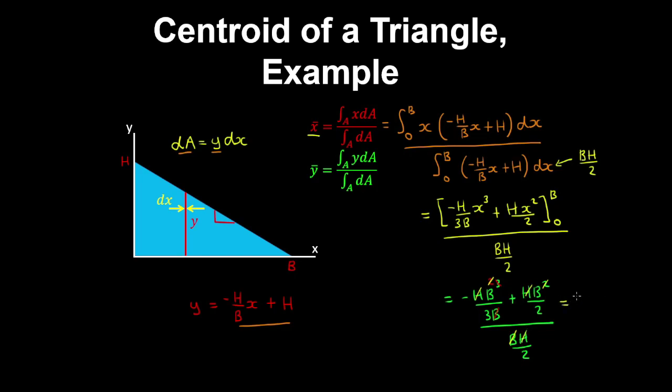So what we get is minus b on 3, plus b on 2, over a half. So 1 third is the same as 2 sixths, and 1 half is 3 sixths. So what you get is 1 on 6 on a half, or b on 3.